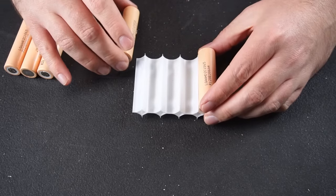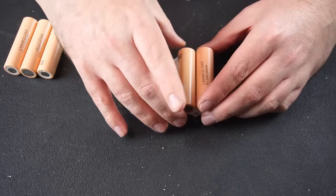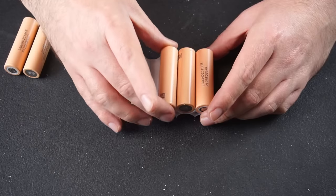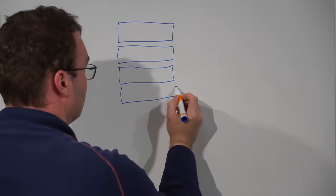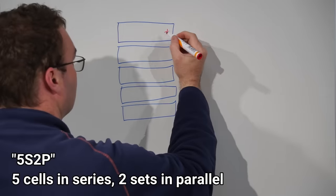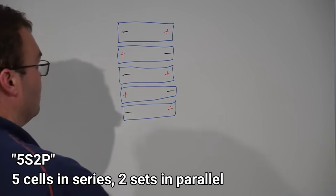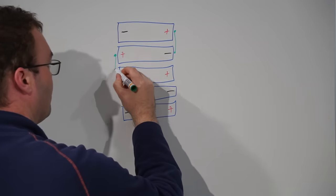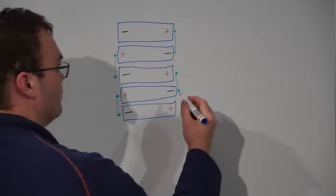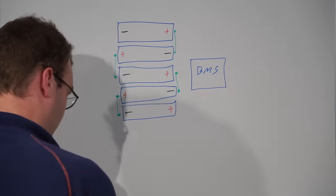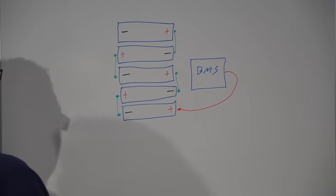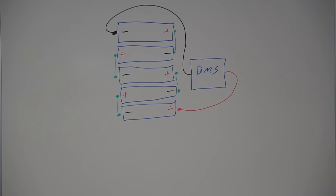With that done, I can start to assemble the pack by arranging the cells in a series configuration. This battery I'm repacking is a 5S 2P configuration. The connections are simple. There are 5 cells connected in series like this. This makes up 1 set of cells. And since my battery is a 2P configuration, there are 2 sets wired in parallel to create a 5S 2P battery pack. The BMS connects to each end of the 5S pack like this.